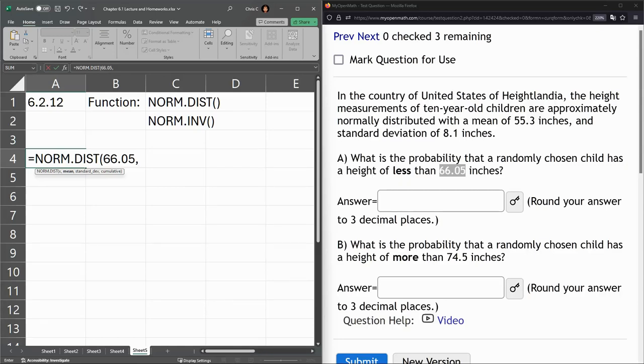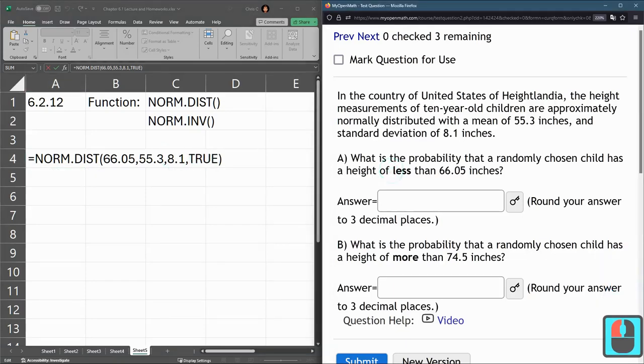The mean, as stated a minute ago, 55.3. Standard deviation, 8.1. Now the last one is cumulative, and we want to do true here. Make sure you spell it correct. So again, I want the value, then the mean, then standard deviation. And we want cumulative because it's a height less than this number right here.